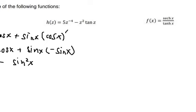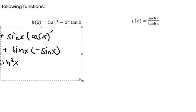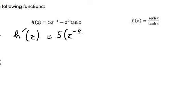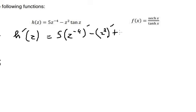Now let's go to the next one. If we do this function, we get 5. We take the first derivative of z to the power of negative 4, then the first derivative of z squared, and later the first derivative of tan z.